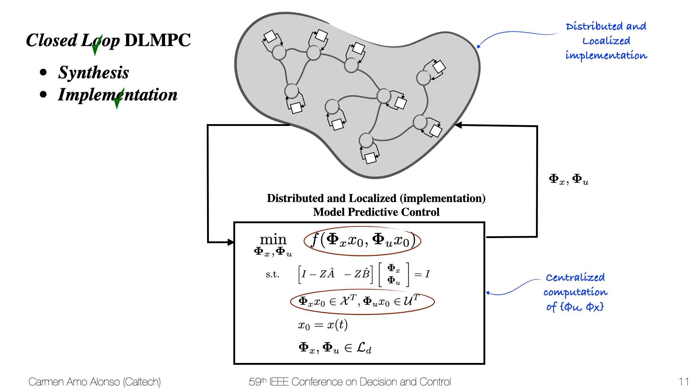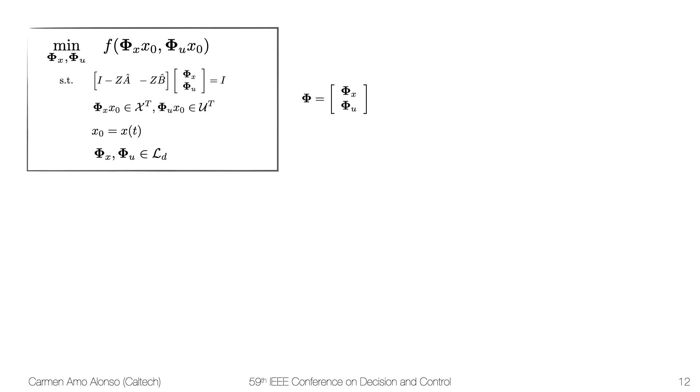However, for us, the optimization is amenable for distribution, and I'll discuss now how we can distribute it. If we have this optimization, let me just perform this change of variables that's going to help me write this optimization in a more compact way.